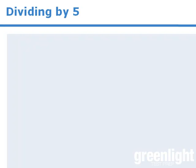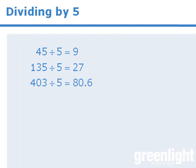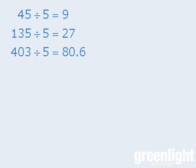Alright, to set things up, let's first make some observations. Notice that when we take these numbers and divide them by 5, we get the following results. See if you can find the relationship between the first number, the dividend, and the result, the quotient. It might not be obvious at first.